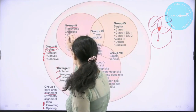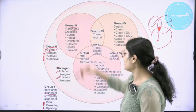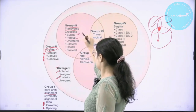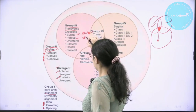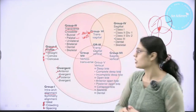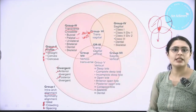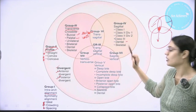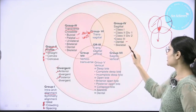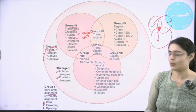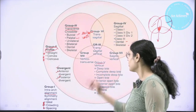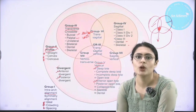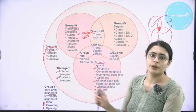The crossbite in the transverse group can be buccal or palatal, unilateral or bilateral. In Group 4 — sagittal — we have Angle's Class 1, 2, and 3, and these can be dental or skeletal classifications. Group 5 is vertical, which covers deep bite or open bite — whether anterior deep bite, posterior deep bite, anterior open bite, or posterior open bite.